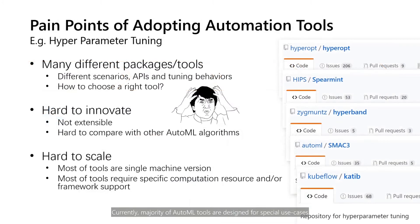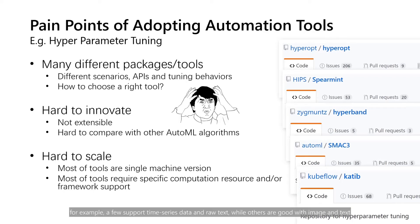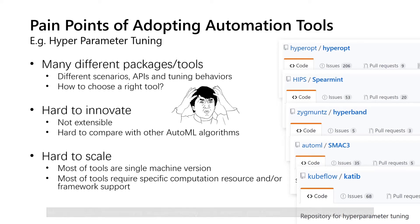Currently, the majority of AutoML tools are designed for special use cases. For example, a few support time series data and raw text, while others are good with image and text. Not to mention that they are either hard to extend or hard to scale.